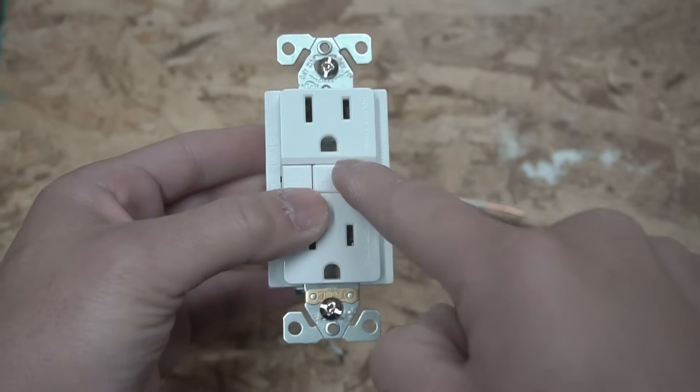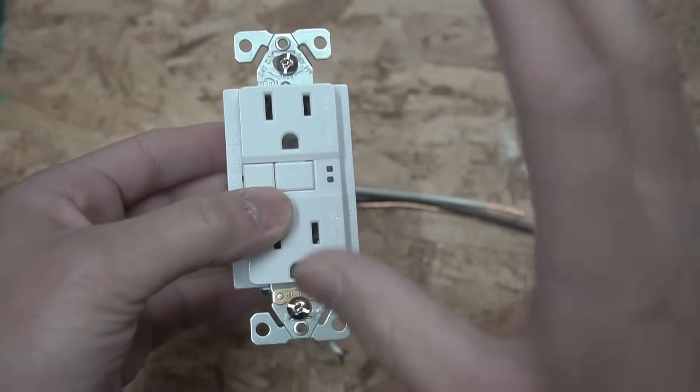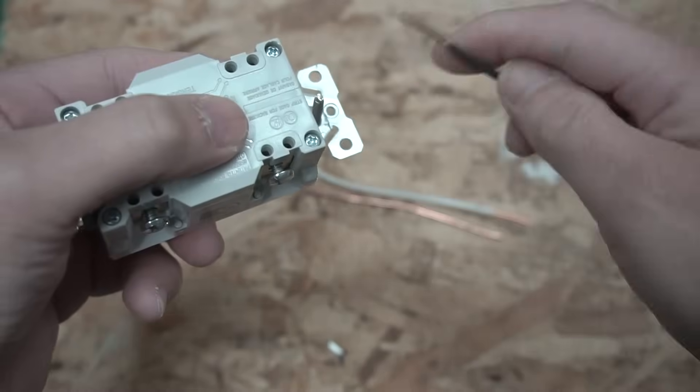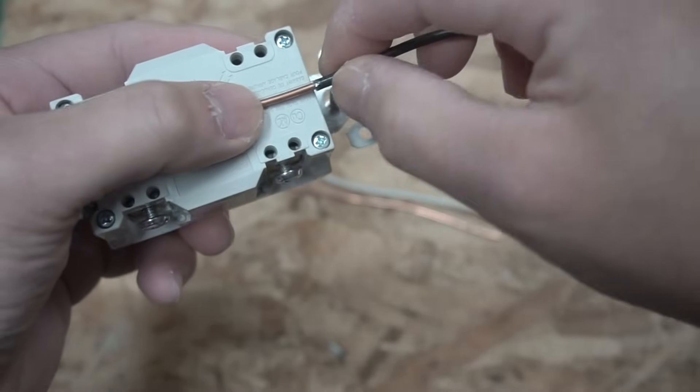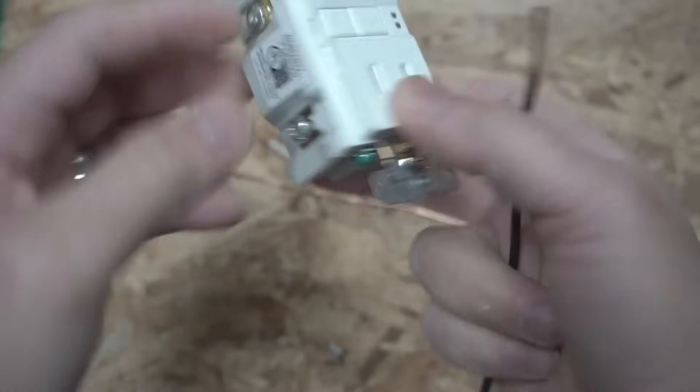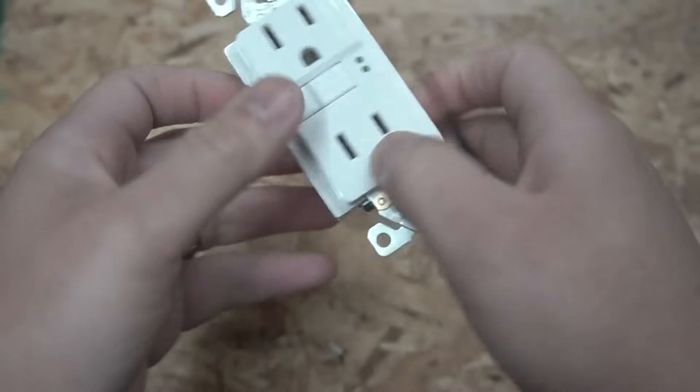We're going to install pigtails onto this GFCI before we install it into our electrical or J-box. And you can tell that there is a strip gauge right here for the back wire. So if we take our hot wire and you strip it, make sure that it's on that length. We're going to be installing the hot on the brass and the neutral white onto the silver.